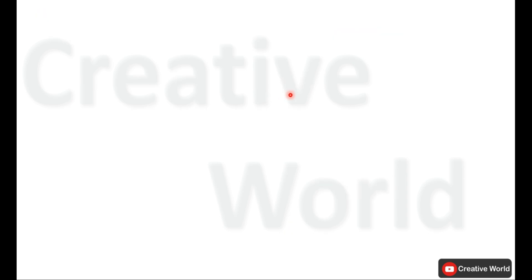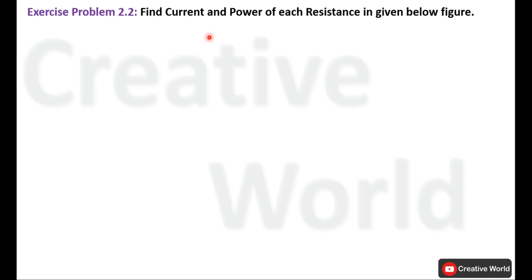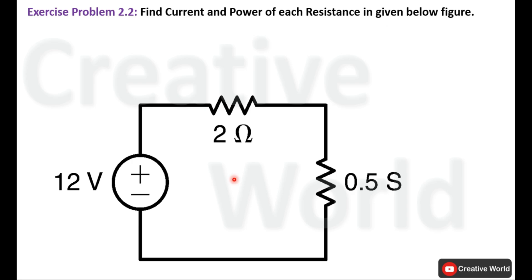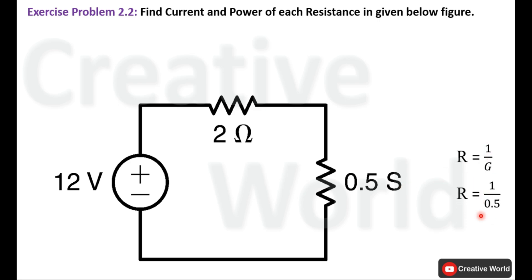Now move towards problem 2.2: find current and power of each resistance in the given figure. This is the circuit diagram. For this particular resistance, the value is given in Siemens instead of ohms, so first we have to convert from Siemens to ohm. We know that resistance is inversely proportional to conductance: R equal to 1 divided by G. Placing the value of conductance gives a resistance value of 2 ohm.